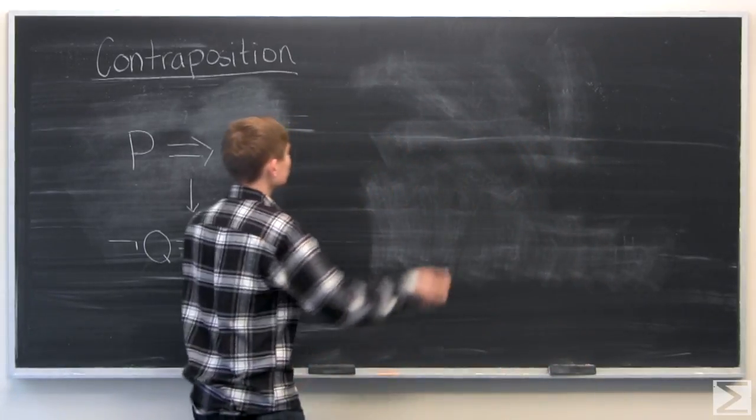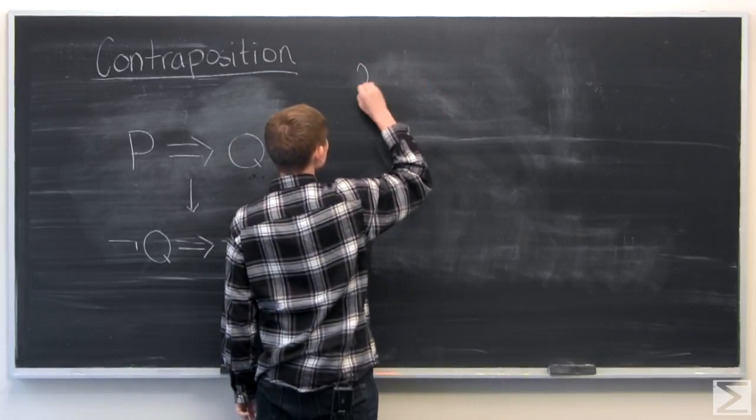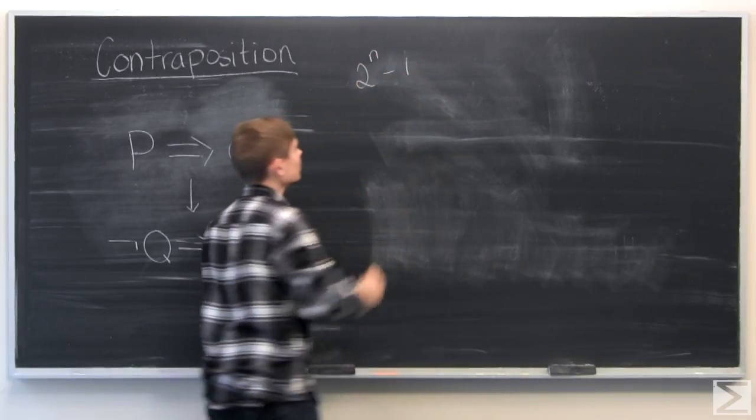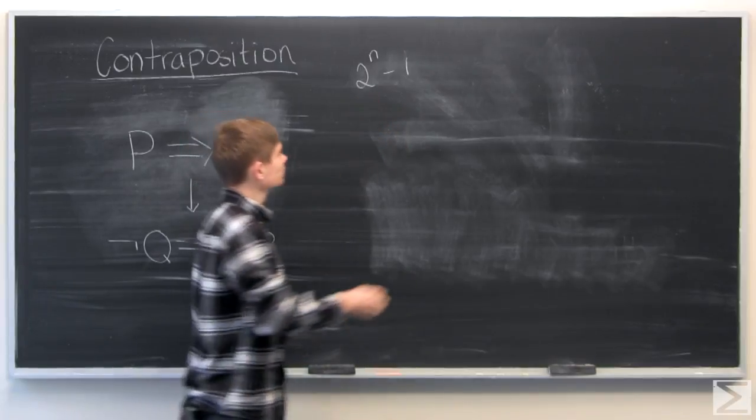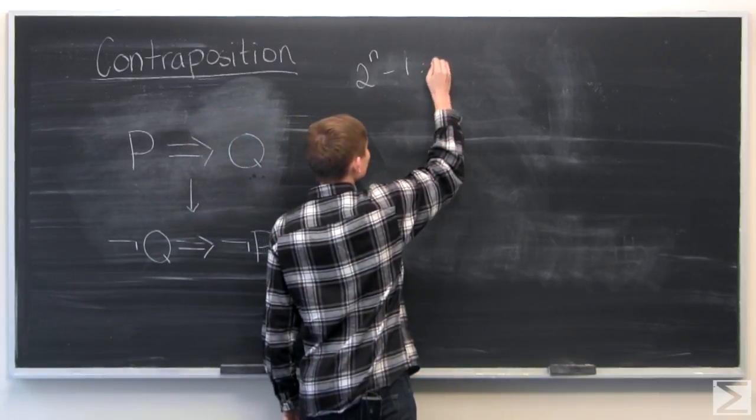So what we want to show is that if we have a number 2 to the n minus 1 and it's prime, this implies that n is prime.